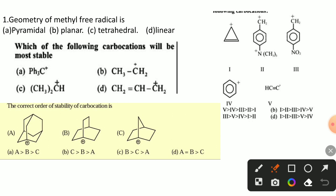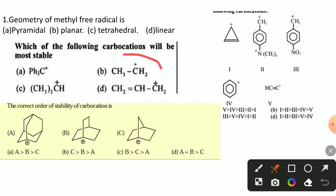Among these four carbocations, triphenyl methyl carbocation is more stable because it is a tertiary carbocation and a resonance-stabilized carbocation. Option B is a primary carbocation, so it is less stable. Option C is secondary, and option D is allyl carbocation and primary.